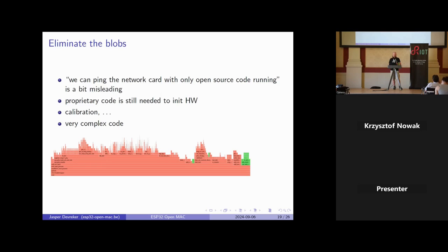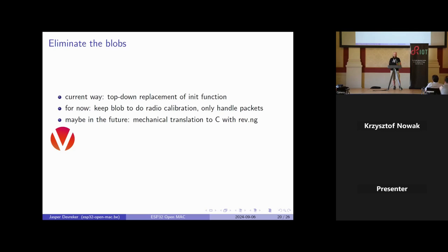Unfortunately this initialization code is very complex because it needs to do calibration of the TX and RX parts of the Wi-Fi radio. This is black RF magic and you don't know what the registers do, so it's kind of hard to reverse engineer. For now we'll keep this binary blob to do the radio calibration. Maybe in the future there's a project called refng which offers to do binary translation of your binaries back to compilable C, which sounds very promising — we might use that in the future to replace the initialization functions.